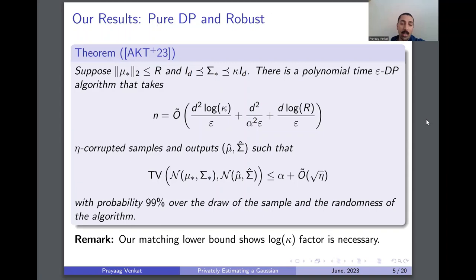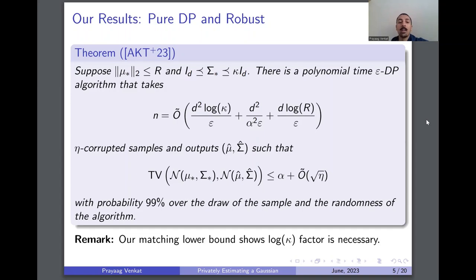Our second main result applies to pure DP and robustness. In this setting we need additional assumptions: an upper bound r on the norm of the unknown mean mu star, and an upper bound kappa on the condition number of the unknown covariance sigma star. Given these assumptions, we show there is a polynomial time pure DP algorithm taking n roughly quadratic in d times log kappa many samples, learning the unknown Gaussian to within information-theoretically optimal TV distance. We also give a matching lower bound showing this log kappa factor is necessary.